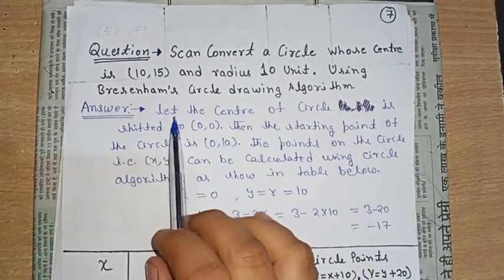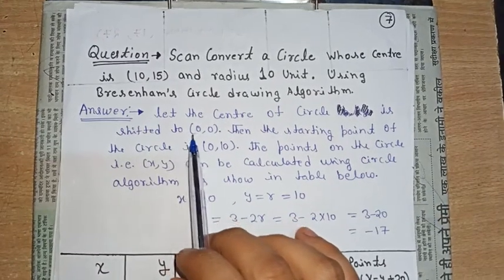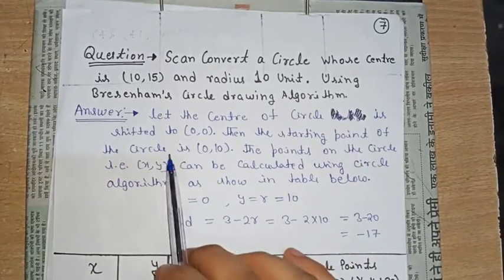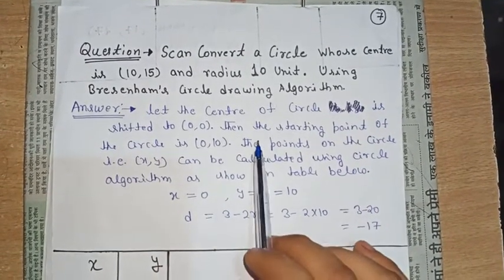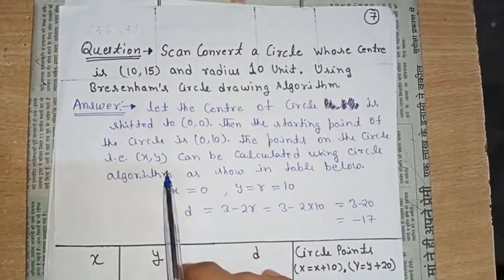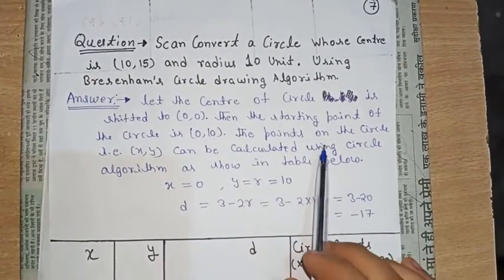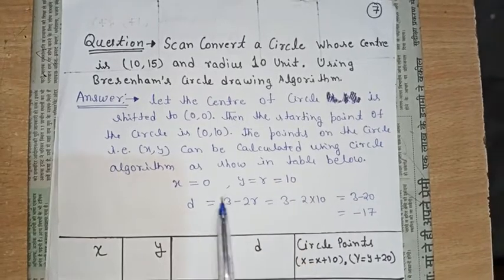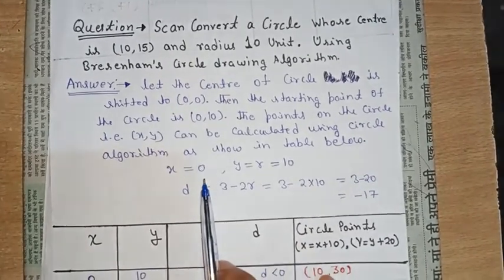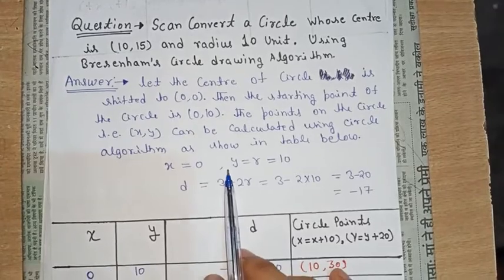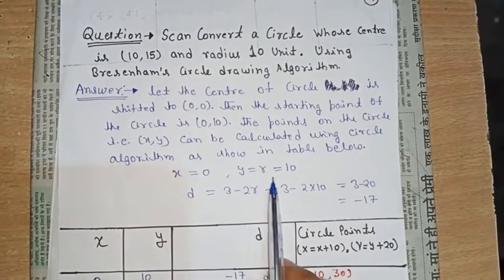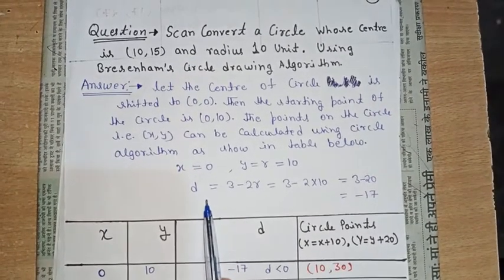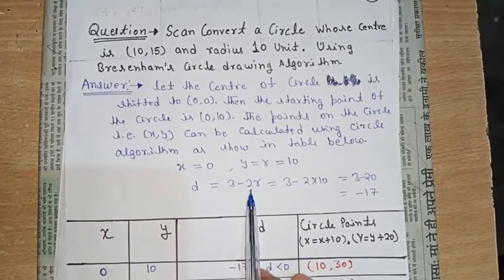Let the center of the circle be shifted to (0, 0). Then the starting point of the circle is (0, 10). The points on the circle (x, y) can be calculated using the circle algorithm as shown in the table below. We will start from x equal to 0 and y equal to r, where r is the radius, which is 10 units. Now find the value of d. The formula is d = 3 minus 2r, where r is the radius.